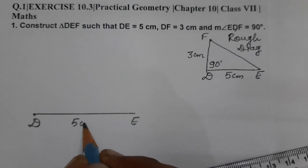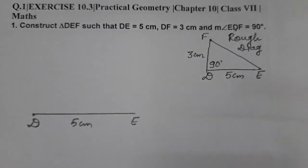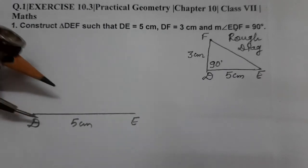Now here it is 90 degrees and we have to use compass to make 90 degrees. We are not using protractor as this is construction, and all angles which are multiples of 15.